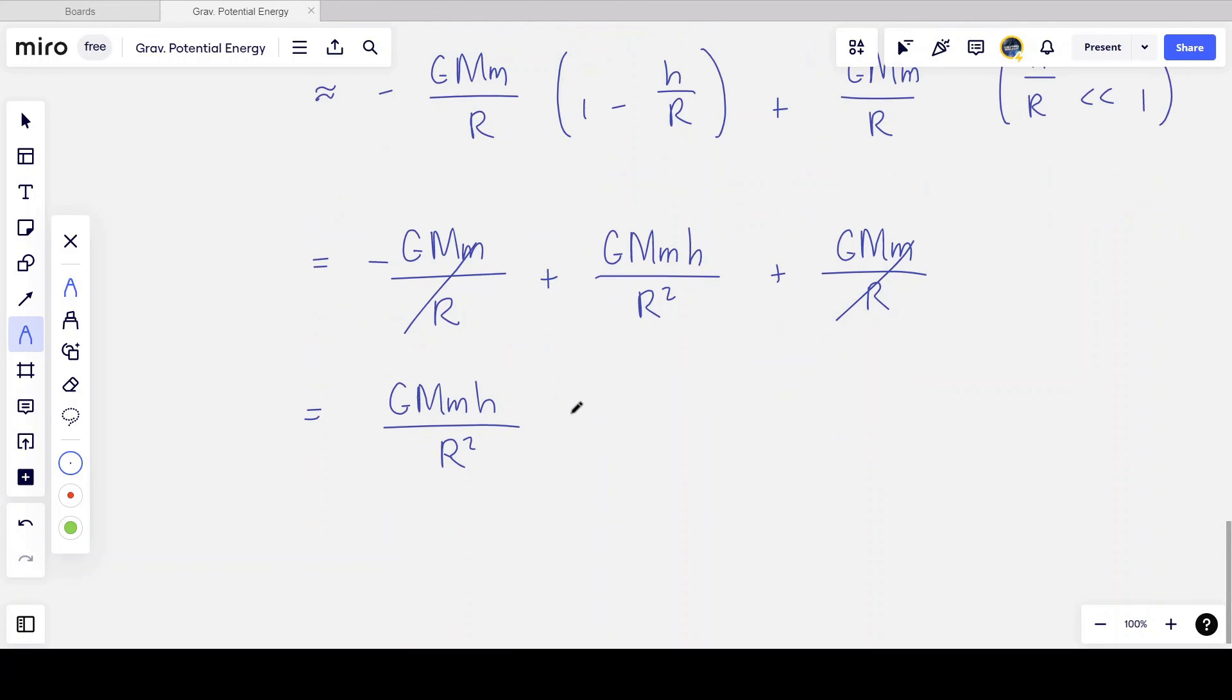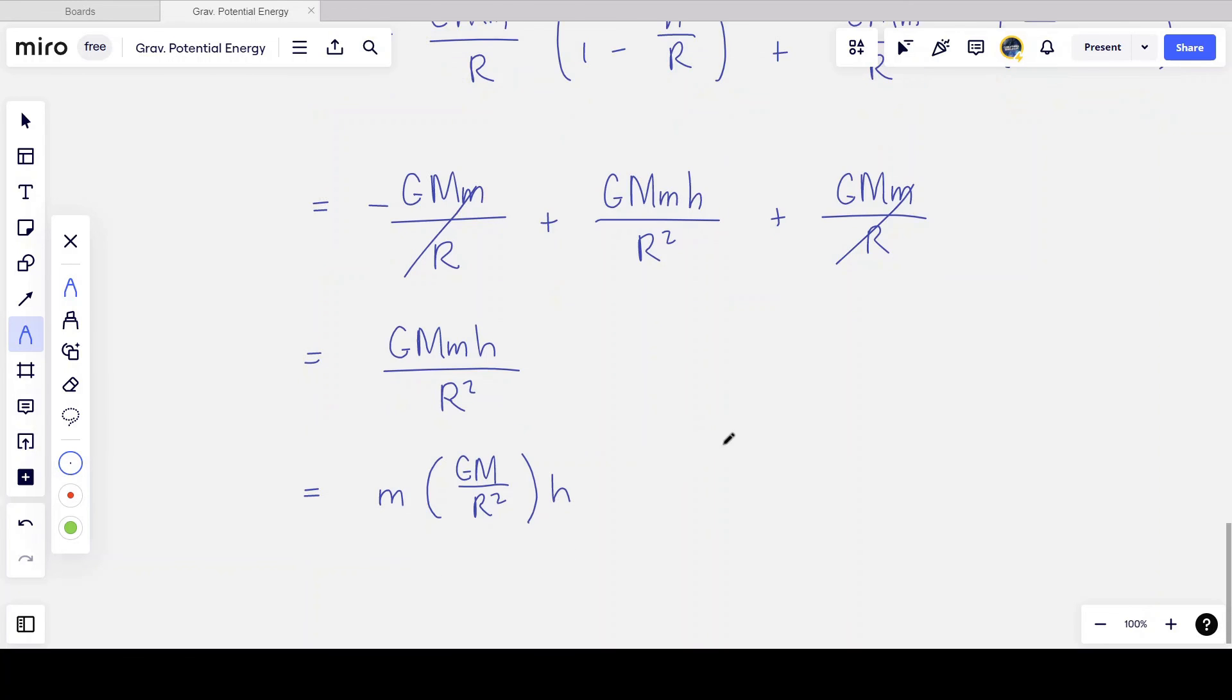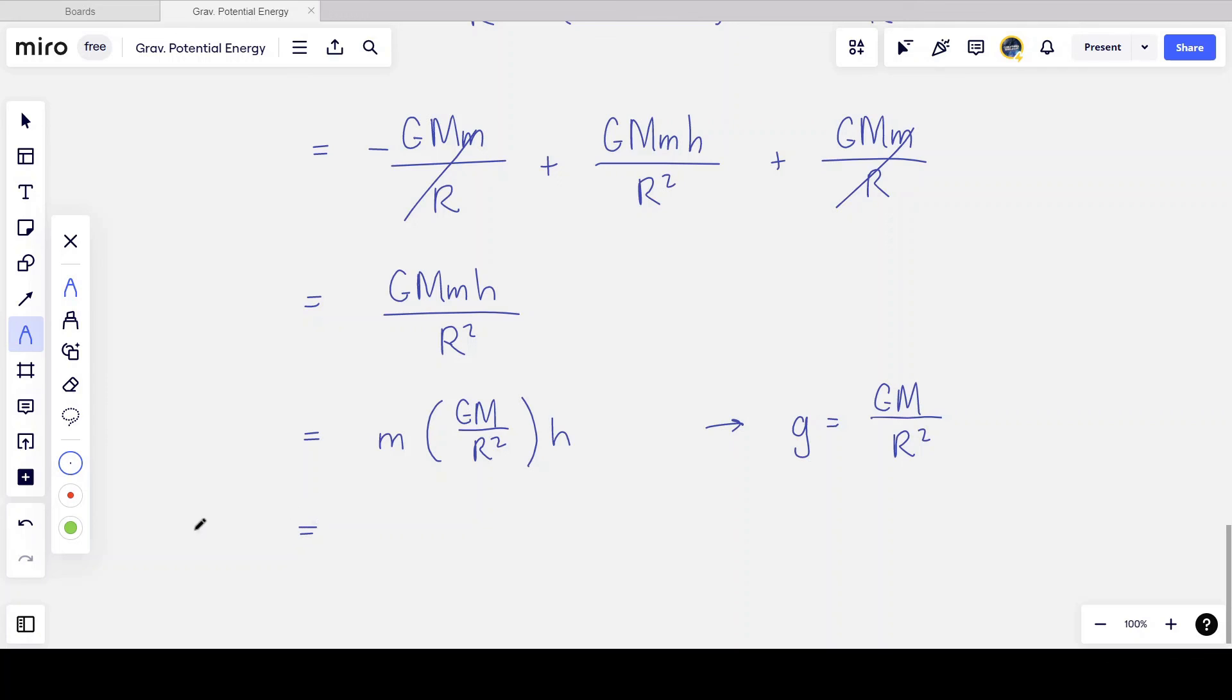And what we're left with is G M m h over r squared. This still doesn't look like mgh. But wait, I can cleverly write this as m and I can put G M over r squared in brackets times h. Why would I do this? Simply because I remember that the gravitational field strength g at the surface of the Earth is given by G M over r squared. So little g is big G times M over r squared, which is the thing in brackets. And so this actually can be written as m g h.